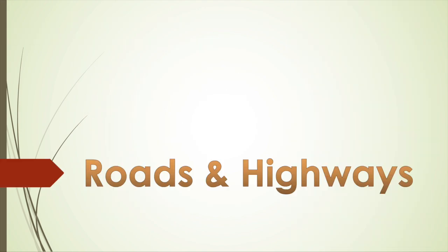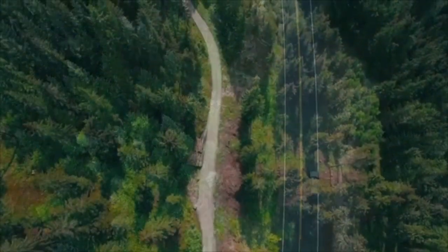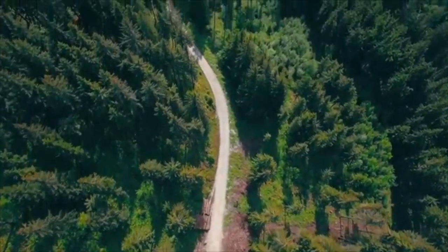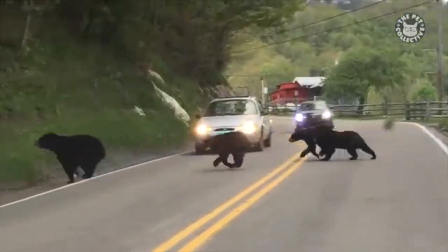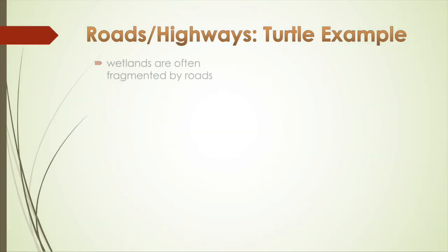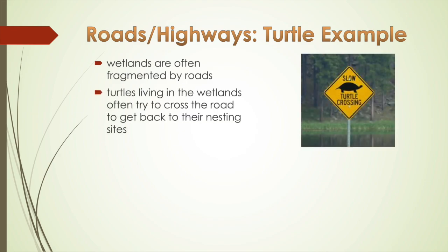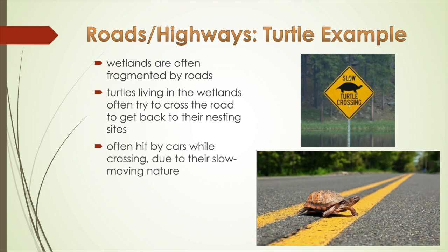Roads and highways have become a huge issue in several habitats. Humans build roads and major highways to improve travel and the transportation of goods from one place to another. However, this not only divides the habitat but the now fast-driving large vehicles prove to be a threat for any animal trying to cross the road. Turtle species have been horribly impacted as wetlands are often fragmented by roads. Turtles living in wetlands often try to cross the road to get back to their nesting sites and are often hit by cars due to their slow-moving nature and the speed at which cars are driving.